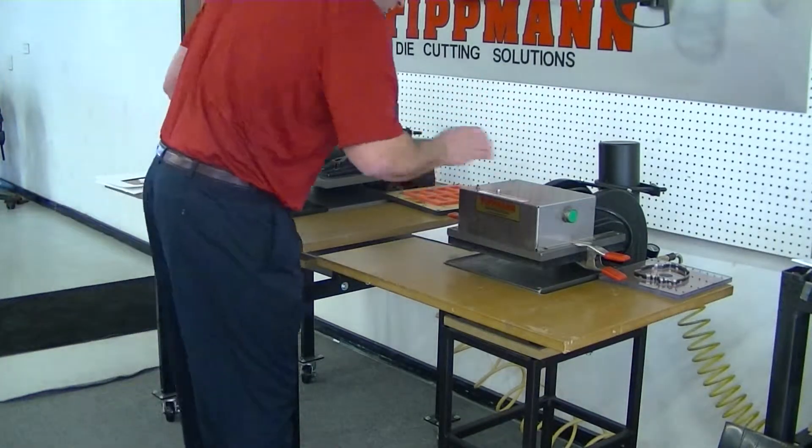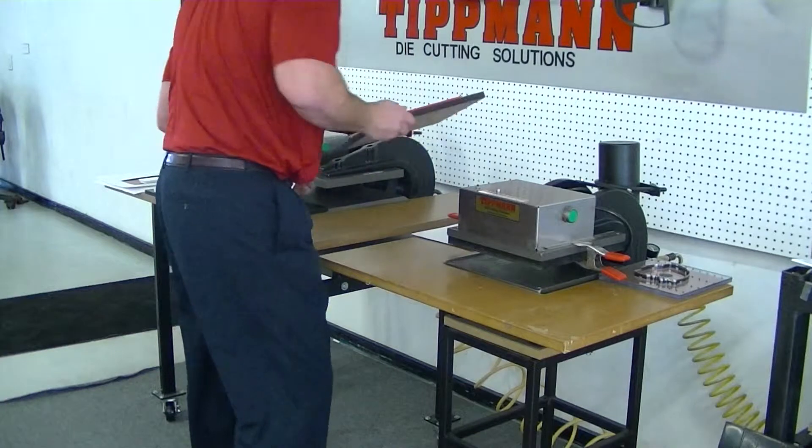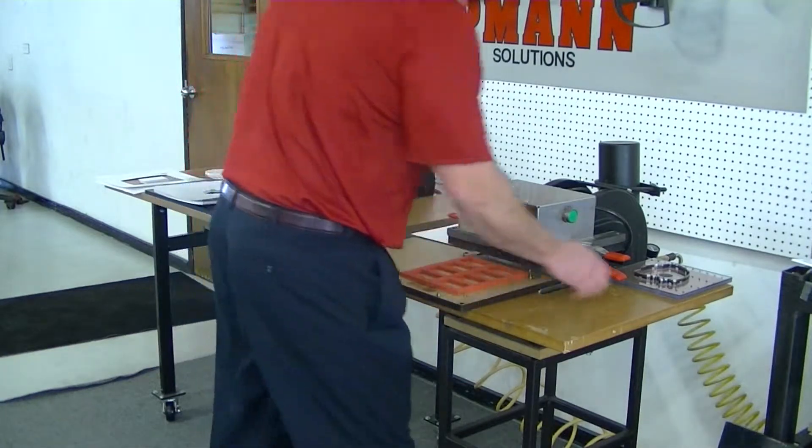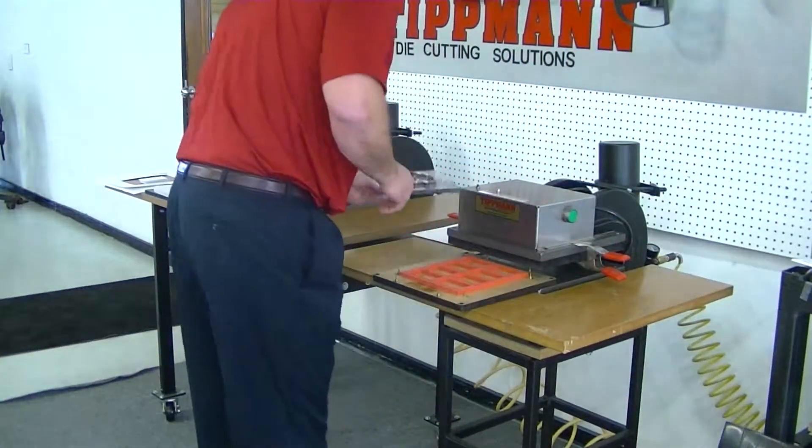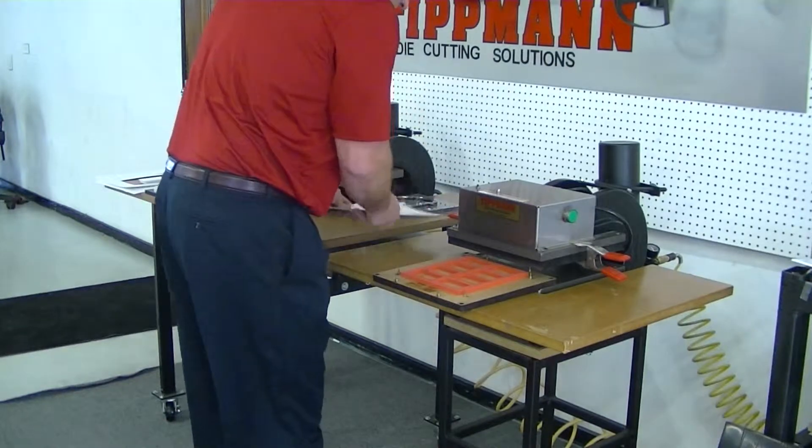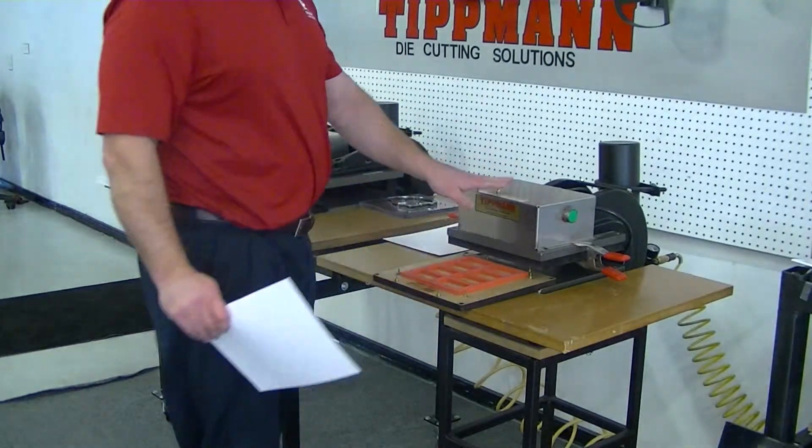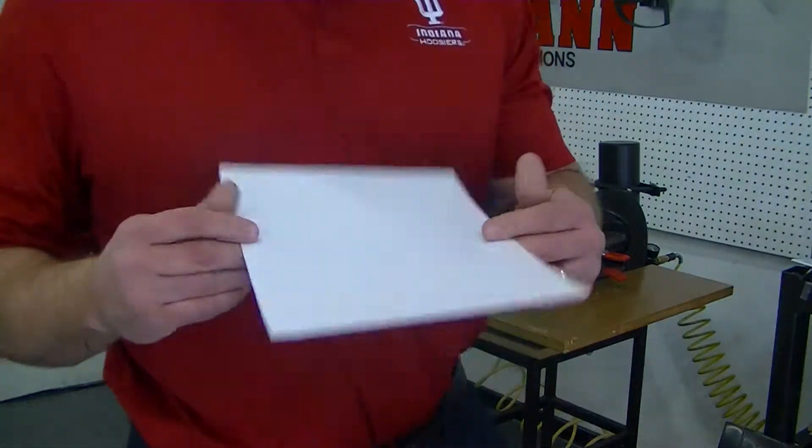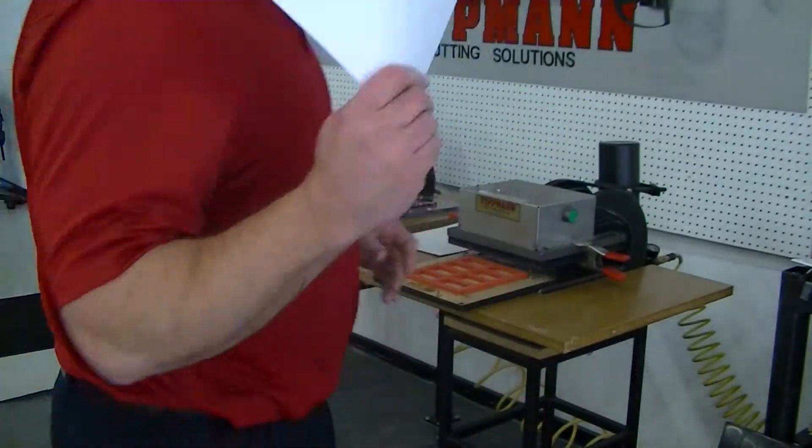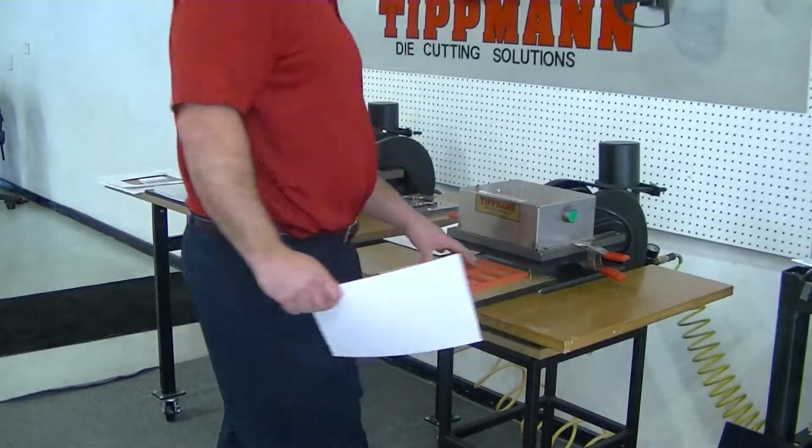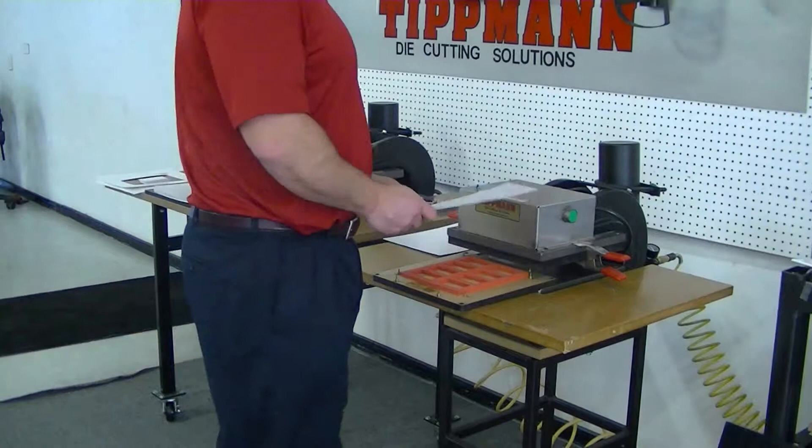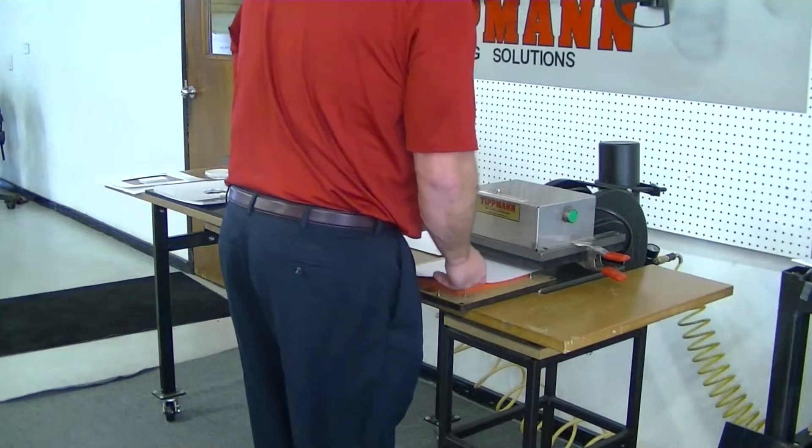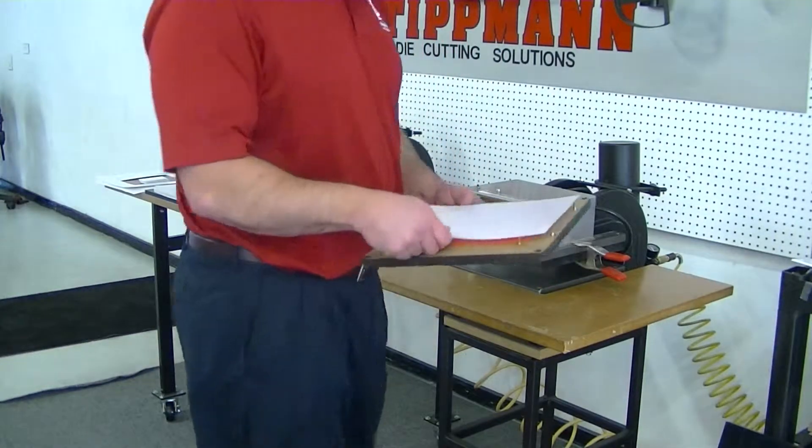Now, this 700 press works identical to the 1500 press, except it has half of the cutting power. With this steel rule die on this press, I can actually only do one layer at a time. There's not enough pressure for this die with 61 inches to cut through more than one layer of this card stock.